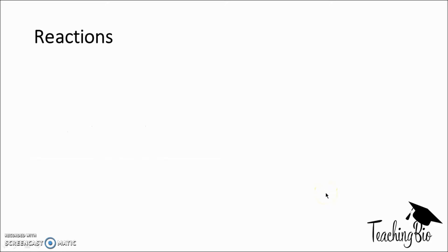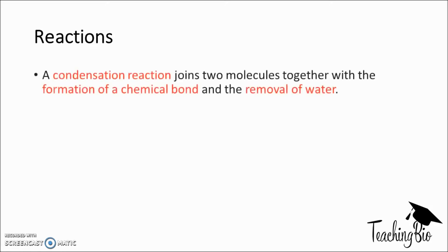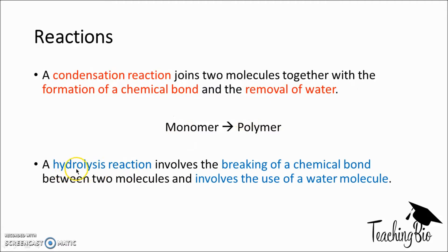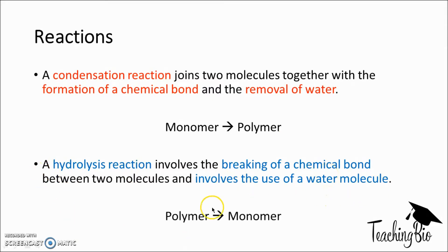You also need to know some chemical reactions. A condensation reaction joins two molecules together with the formation of a chemical bond and the removal of water - this is when we go from monomer to polymer. However, we can do the reverse with a hydrolysis reaction, which involves the breaking of a chemical bond between two molecules and the use of a water molecule. Thus we can go from polymer back to monomer.